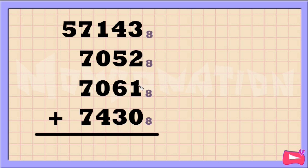3 plus 2 plus 1 plus 0 is 6. 6 is an octal number so just write that down.